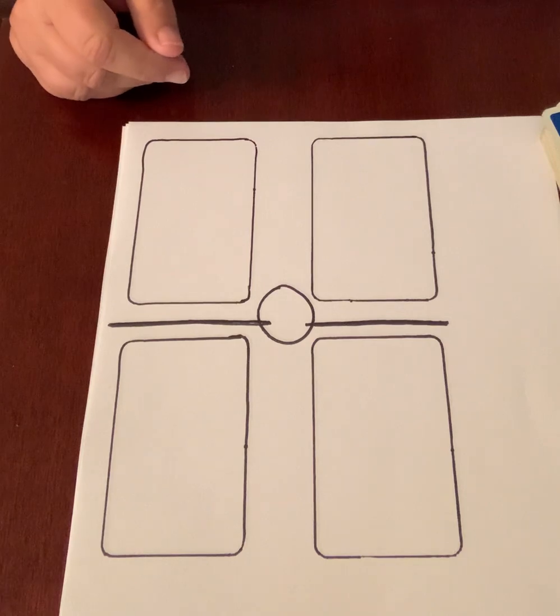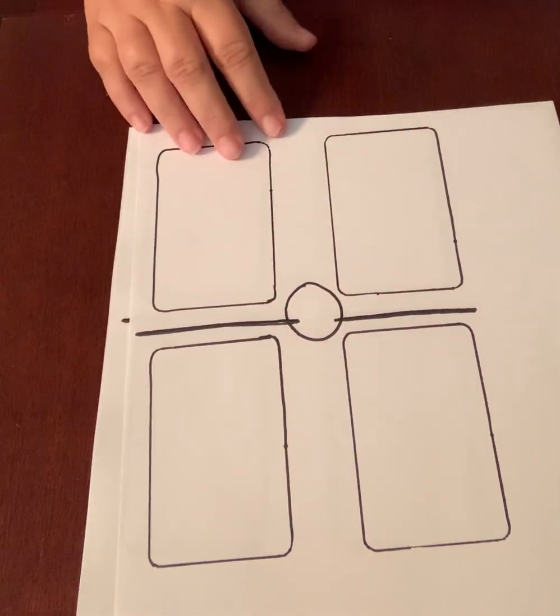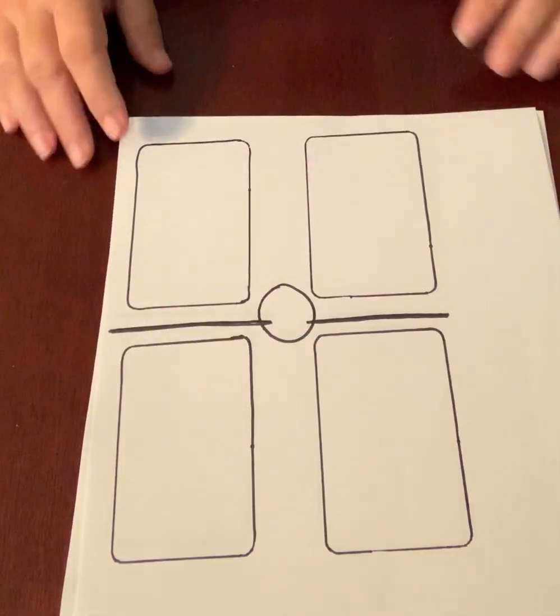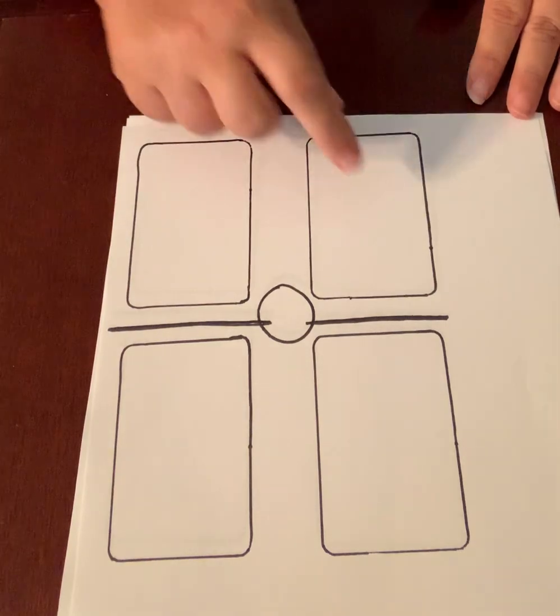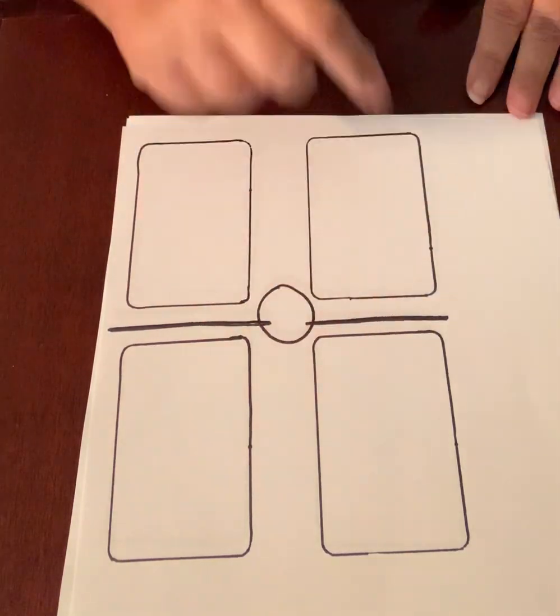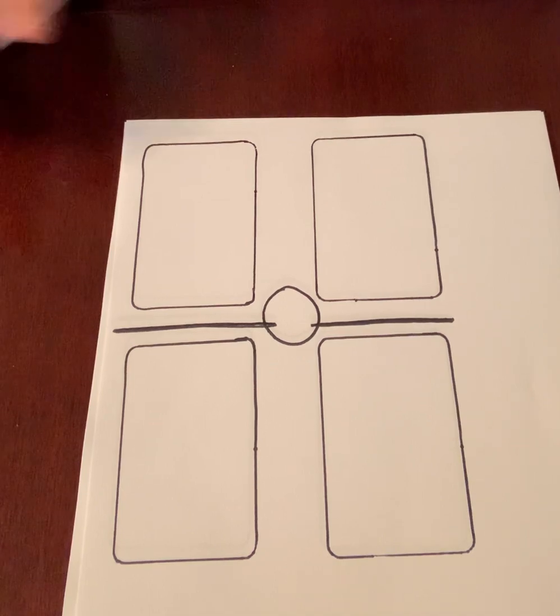So this is Fraction Battle. The first thing you need to do is just get out a simple deck of cards. I like to use my Phase 10 and create a game board similar to this where this is a numerator, the line, denominator, and then this is your son's numerator and denominator. So we're going to be building fractions and then comparing them and the largest fraction wins.